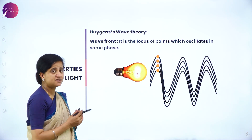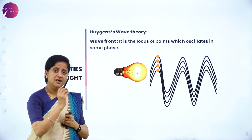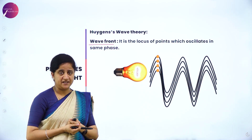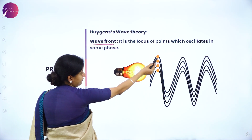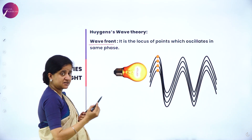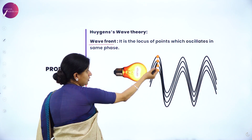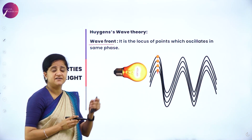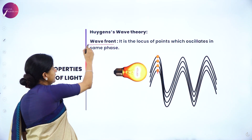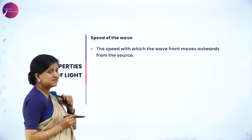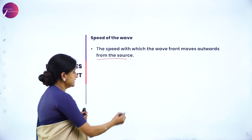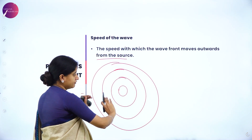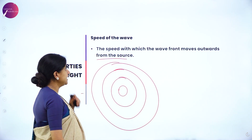Let us now understand Huygens wave theory. To understand it, we need to understand a few related terms. The first term is wavefront — a very important term in wave optics. A wavefront is the locus of points which oscillate in the same phase. If you observe spiral waves, the locus of points oscillating in the same phase is what we call a wavefront. The speed of wave according to Huygens wave theory is the speed with which the wavefront moves out towards the source.